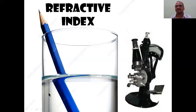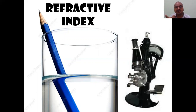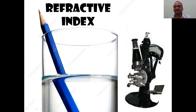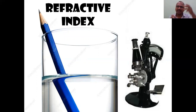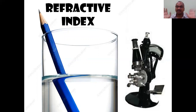Refractive index is another key concept. When a pencil is placed in a glass of water, it appears bent — this is because light bends when passing through a denser medium. This is measured using a refractometer, which is different from a microscope and a polarimeter. The refractive index depends on the nature of the solution.